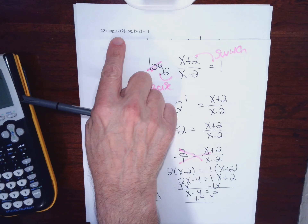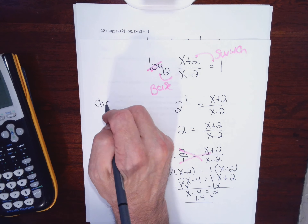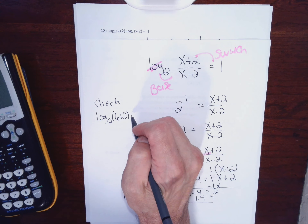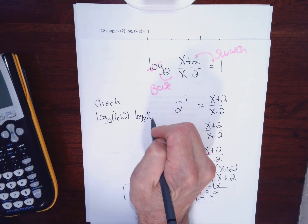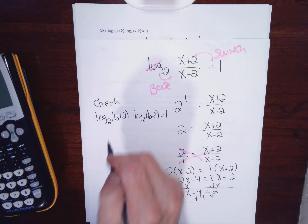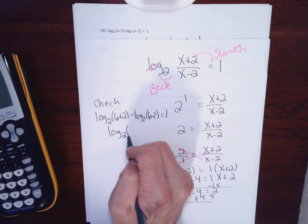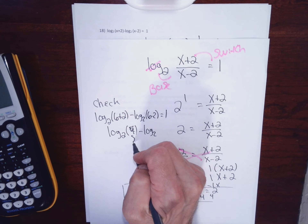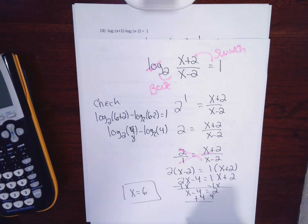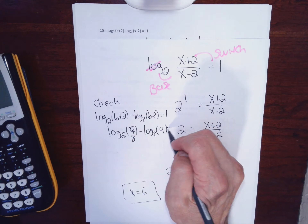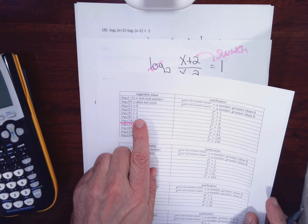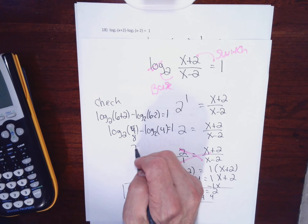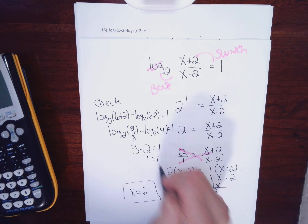I'll check using my table by going to the original problem and changing both x's to 6. That gives log base 2 of 8 minus log base 2 of 4, supposed to equal 1. Log base 2 of 8 is 3, log base 2 of 4 is 2, so 3 minus 2 equals 1 — it checks perfectly.